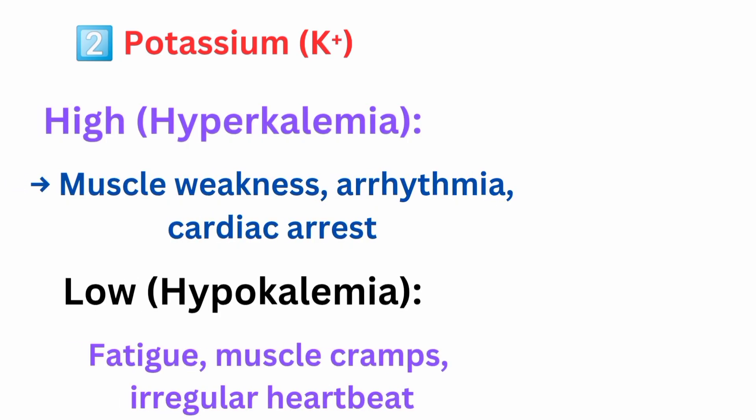Potassium (K⁺): high level is hyperkalemia, symptoms include muscle weakness, arrhythmia, and cardiac arrest. Low level is hypokalemia, symptoms include fatigue, muscle cramps, and irregular heartbeat.